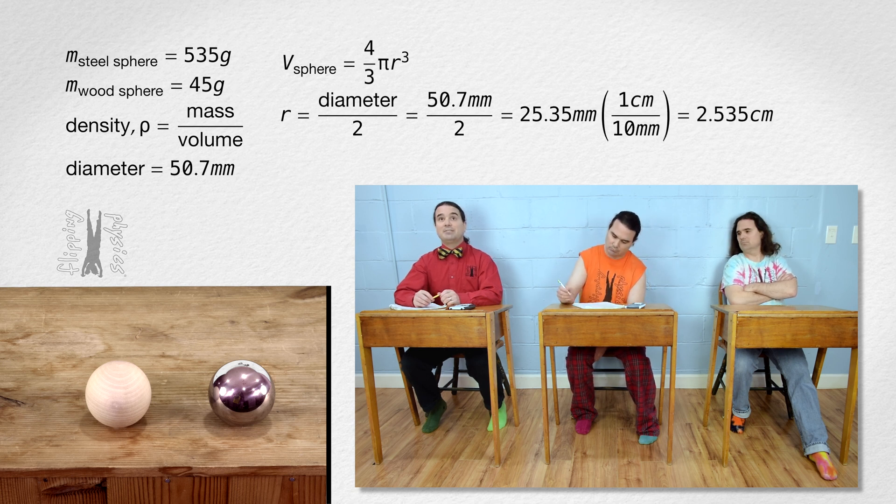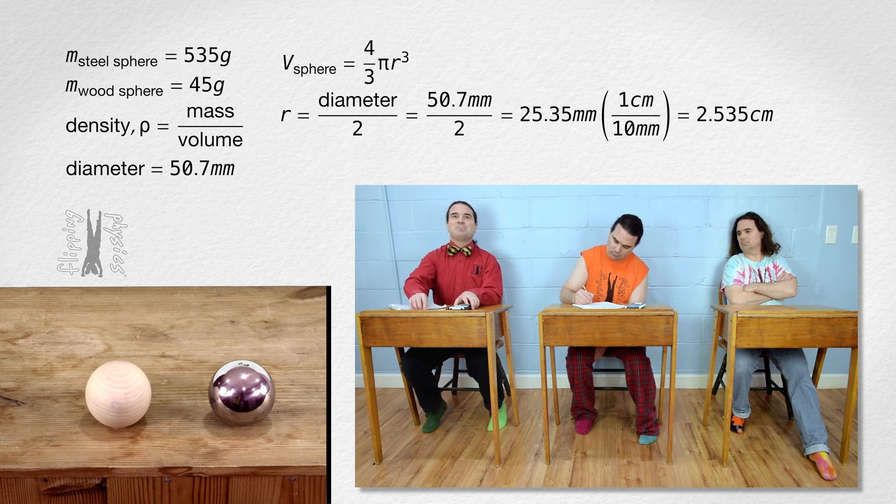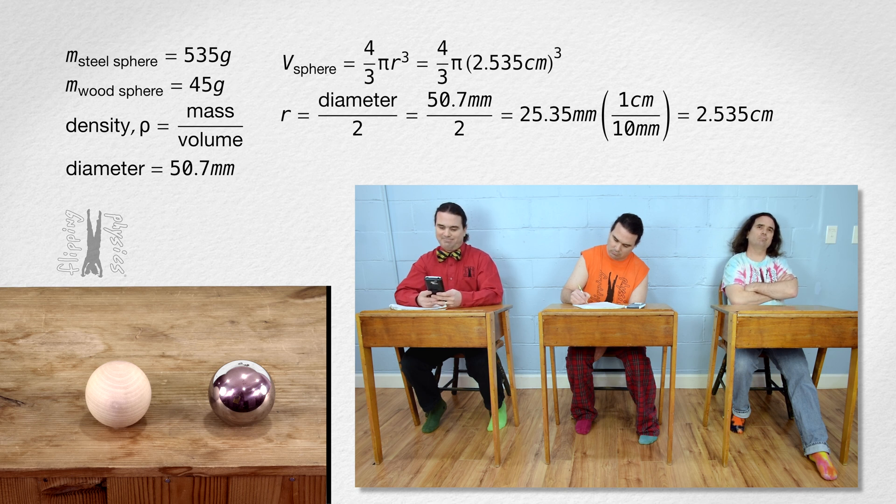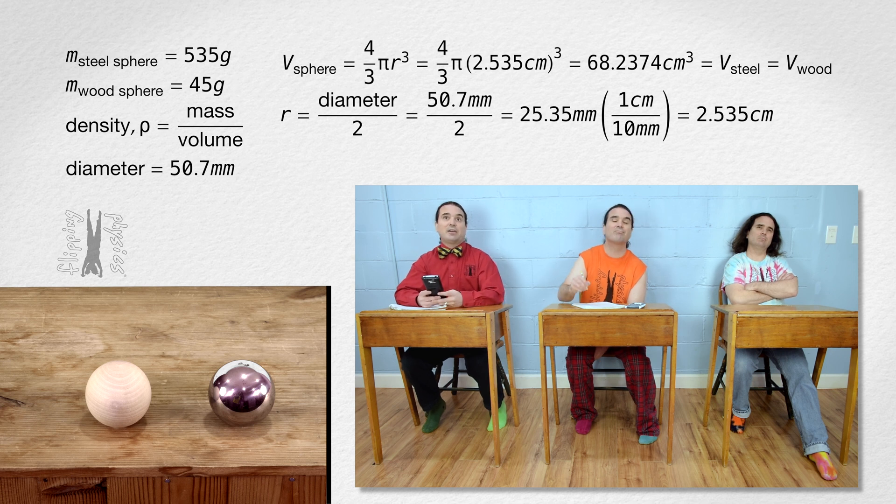So, the volume of both spheres equals 4 thirds times pi times the cube of 2.535 centimeters, or 68.2374 centimeters cubed for the volume of the steel sphere and the volume of the wood sphere. Thank you, Billy.